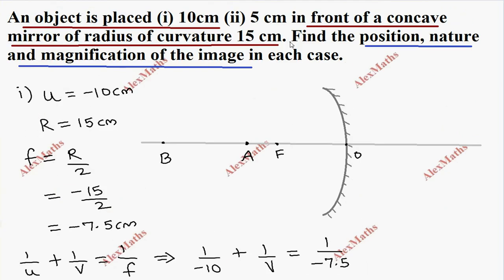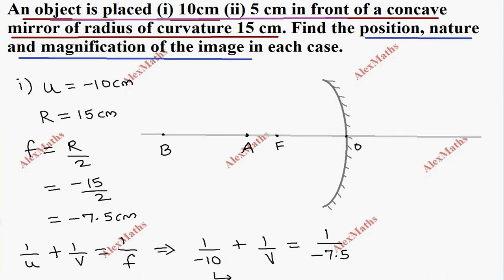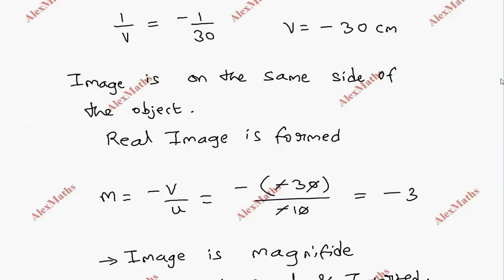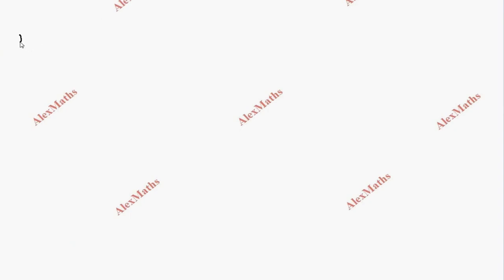Subdivision 2: the object is placed 5 centimeters in front of the concave mirror. We need to find the position, nature, and magnification of the image. So u equals minus 5 centimeters.